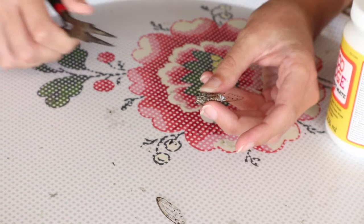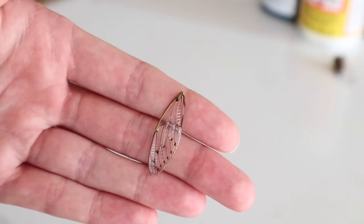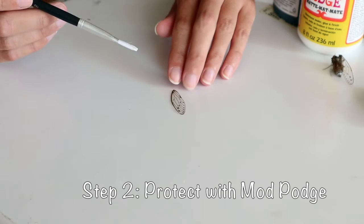Now that I successfully removed the wing, I'm going to protect it. For this, I use Mod Podge. You can apply it with a brush.